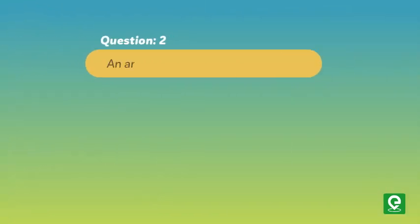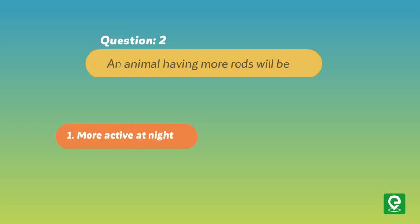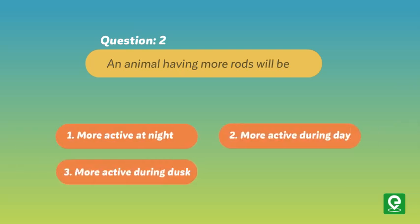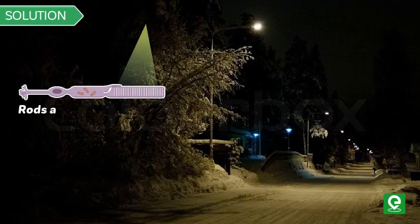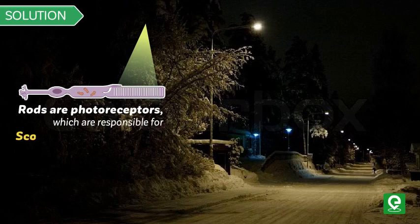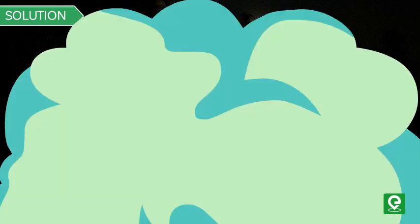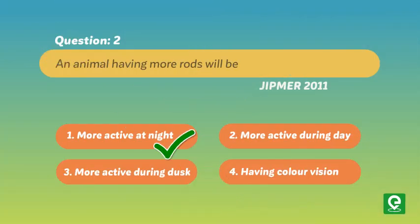Question two: An animal having more rods will be (1) more active at night, (2) more active during day, (3) more active during dusk, or (4) having color vision? This question was asked in JIPMA 2011. Solution: Rods are photoreceptors responsible for scotopic or night vision. Hence, option one is the correct answer.